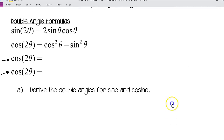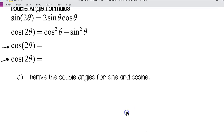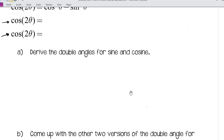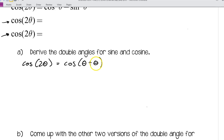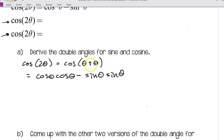Before we fill in the other two blanks, let's derive the double angle formula for sine and cosine. Starting with cosine: cosine of 2θ can be split into cosine of (θ + θ). Using the sum formula, that expands to cosine θ · cosine θ minus sine θ · sine θ, which simplifies to cosine squared θ minus sine squared θ. So we've derived that double angle formula for cosine.